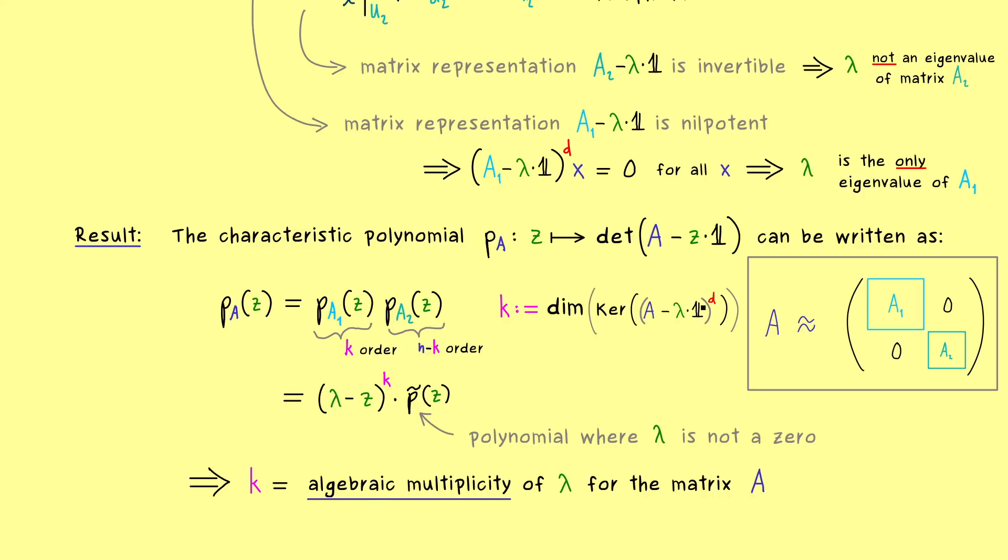But please note the fitting index d is in general bigger than 1. On the other hand we can also interpret that for our block diagonalization. Namely the size of this matrix A1 is exactly given by the algebraic multiplicity. And indeed this is the key ingredient we need to form the whole Jordan normal form for the matrix A.